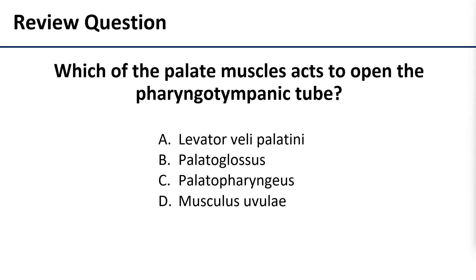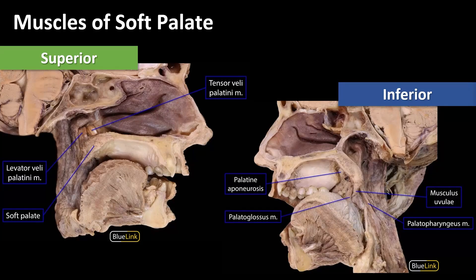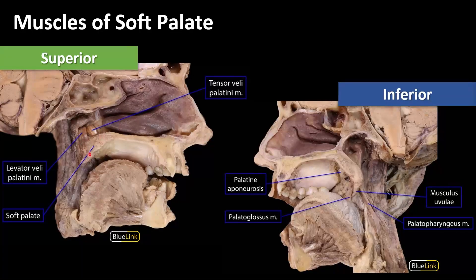Here's your review question: which of the palate muscles acts to open the pharyngotympanic tube? The correct answer is levator veli palatini. If it was included as a choice, you might also have said tensor veli palatini, because both of these muscles have a very close relationship with the pharyngotympanic tube. Both muscles have superior attachments to it as they come through to insert onto the soft palate.